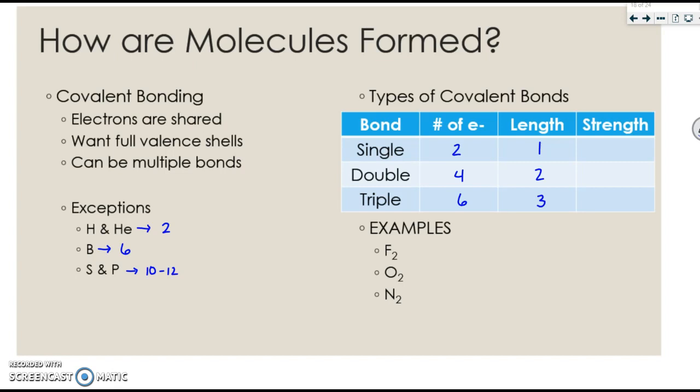It's the opposite for strength. Single bonds are the weakest because there are only two electrons, double bonds are in the middle, and triple bonds are the strongest because there are six electrons. More electrons means stronger.